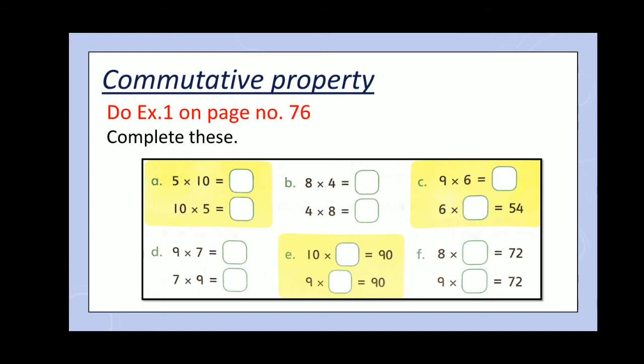Now, open page number 76 and complete all the parts in book. These are the sums of commutative property. Always remember, the answer will remain same when you do the sum of commutative property. Like, when you multiply 5 by 10, the answer will be 15 and when you multiply 10 by 5, the answer will be same, again 15.